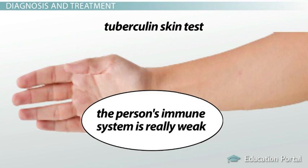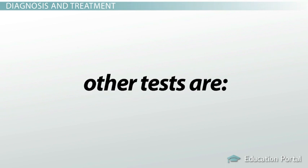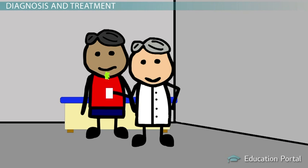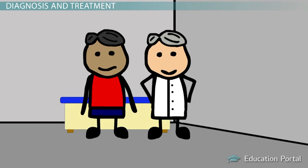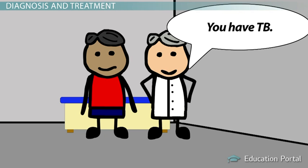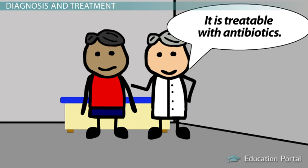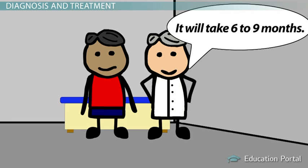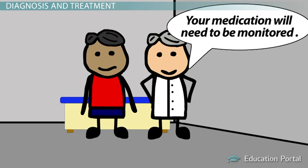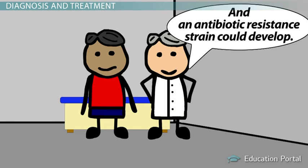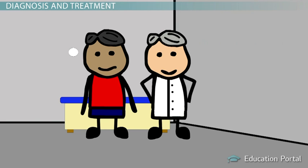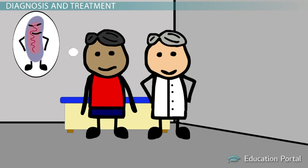If there is no reaction, that means none of those things have occurred, or the person's immune system is really weak and cannot form a reaction. Other ways TB is diagnosed include blood tests, analyzing a sample of coughed-up sputum, and chest X-rays. If a person is diagnosed with this disease, they are treated with a combination of antibiotics such as rifampin and isoniazid for an average of six to nine months. This process is monitored by healthcare professionals to ensure patients actually take the medication as prescribed, because failing to do so may cause antibiotic resistance to develop, leading to far more dangerous strains of this bacterium.